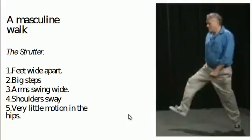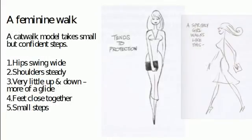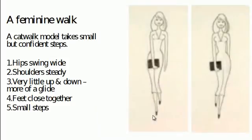Here's a still taken from the video demonstration of the Animator's Survival Kit showing the same principle. And here's the same thing on a woman: more motion in the hips, very little motion in the shoulders. Shoulders tend to be steady, very little up and down motion — tends to be more of a glide. Think of a catwalk model gliding. Feet are also very close together, taking small, delicate, petite steps. Obviously all of this is caricature — or even stereotyping, frankly — but that's what animation is about. It's really about caricature; we're trying to caricature reality.